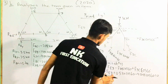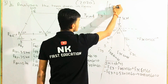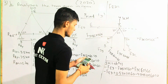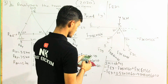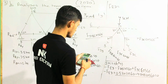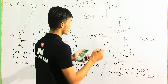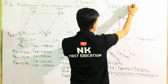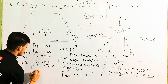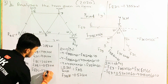F ed is going to be calculated: 0.257 into cos 60 minus 4.04 into cos 60, minus 1.735 kilo newton. F ed is equal to minus 1.735 kilo newton.